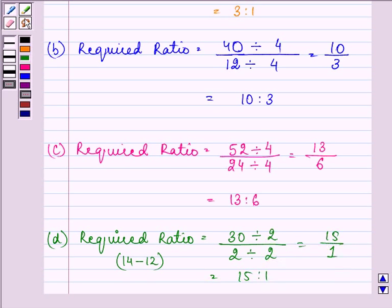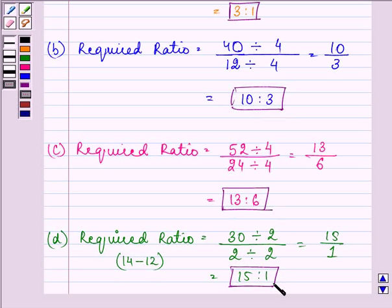So, these are the required answers. That is 3 is to 1 for the first case, 10 is to 3 for the second, 13 is to 6, and then 15 is to 1 for the last and final part. Hope you understood it well. Take care of your calculations and have a good day.